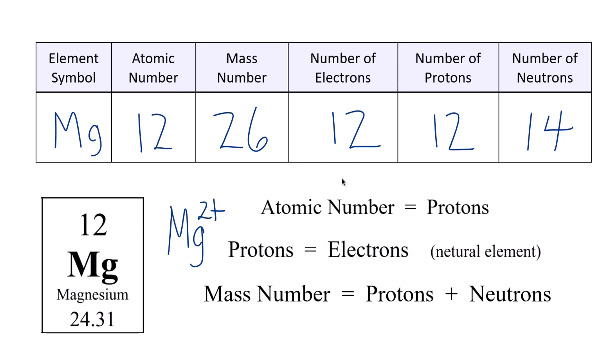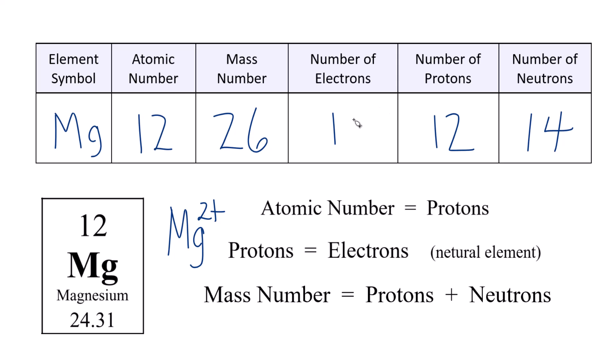So if you think about it, we have a two plus. We've lost two negative charges, that's why we became positive. So let's get rid of two electrons there, and we end up with just 10 electrons. So with ions, the only difference, that's the number of electrons. Everything else, we do the same.